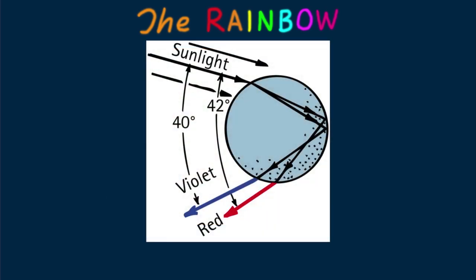Here we see refraction and internal reflection in a sample water drop. The illustration shows only the red and violet rays; all the other colors are in between. This is one of millions of tiny spherical drops that act like prisms. Follow the ray of sunlight as it enters the drop near its top surface. Some of the light is reflected, which we don't show, and the remainder is refracted into the water. At this first refraction, violet deviates the most and red the least.